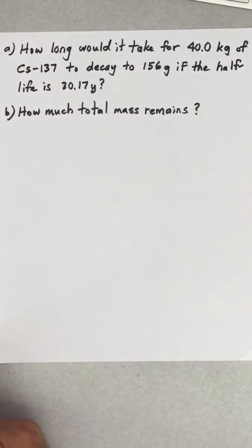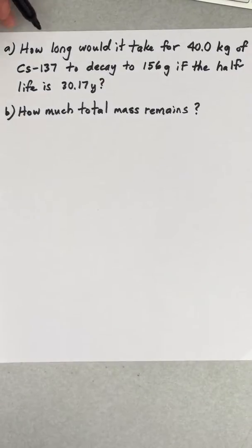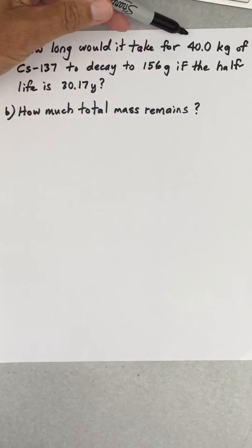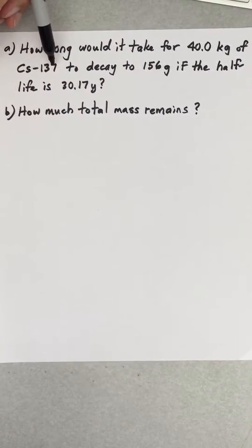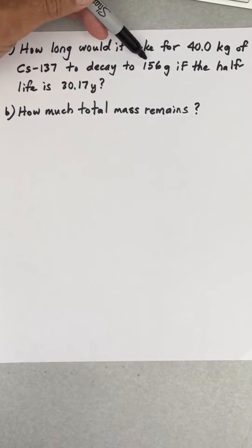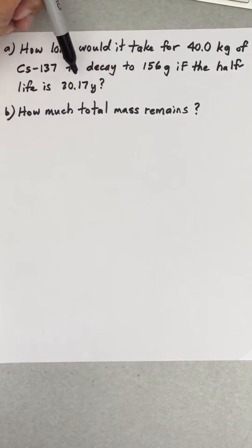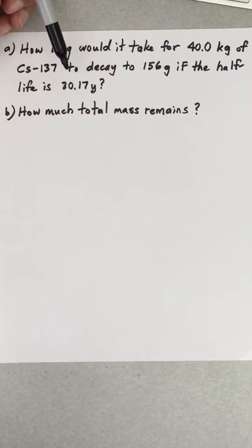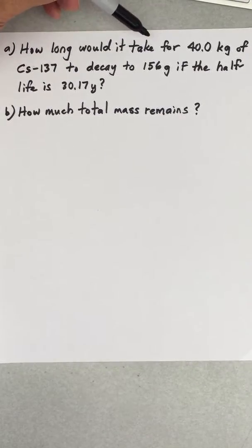Here's a half-life problem: How long would it take 40 kilograms of cesium-137 to decay to 156 grams, given the half-life being 30.17 years? With half-life problems, you're either going to calculate the time it takes, like this one, or you're going to calculate how much mass is left over after a certain period of time.